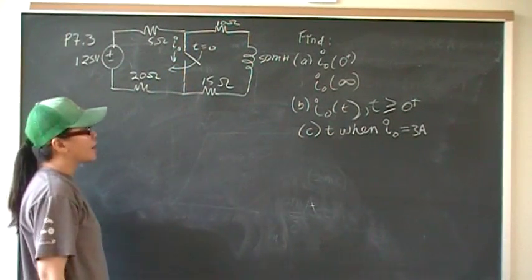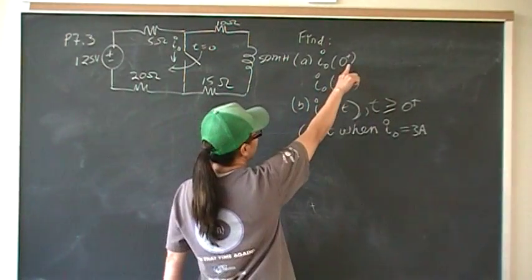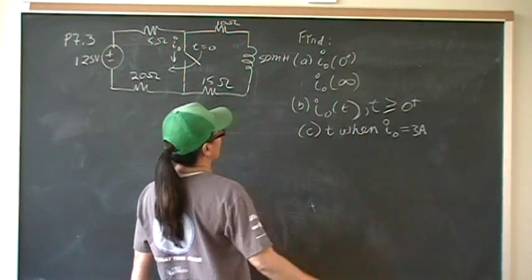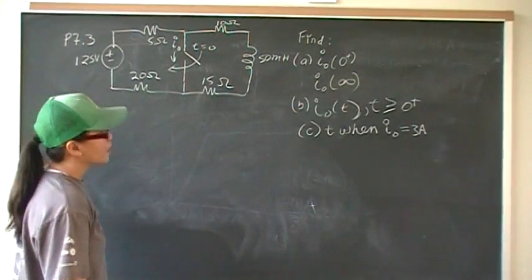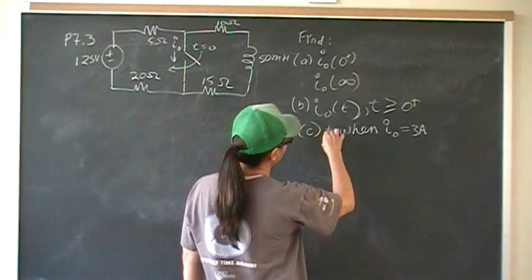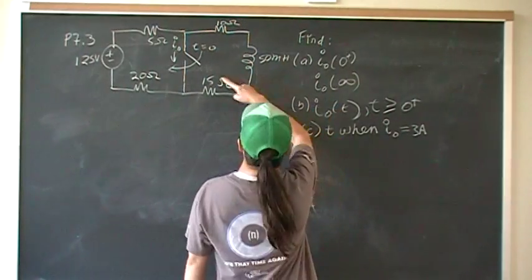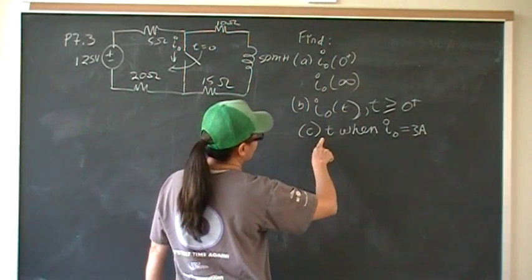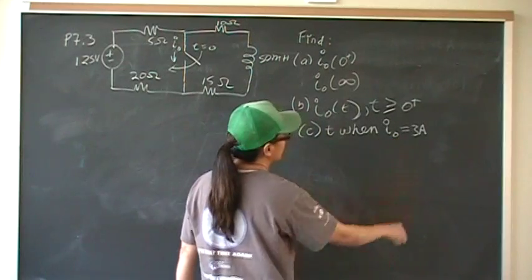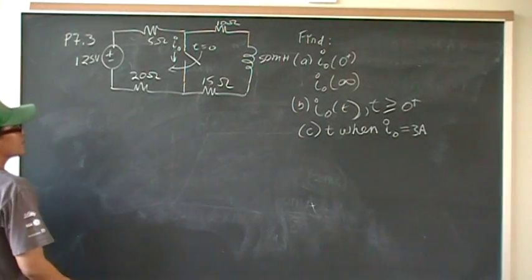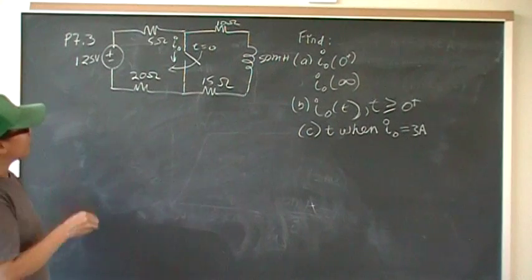So we want to find I naught right after the switch closes and I naught after it's been closed for a long time. And then we want to find the general equation for I naught. And we want to find the time when I naught is equal to three amps.